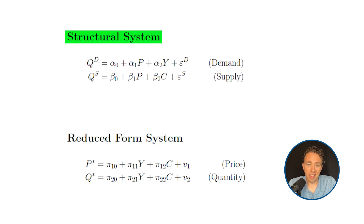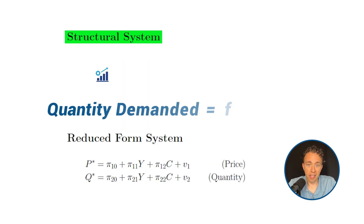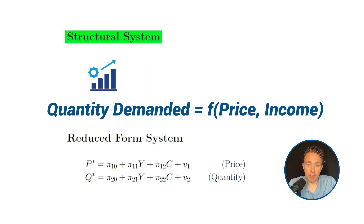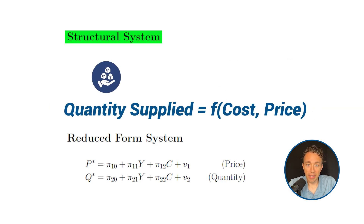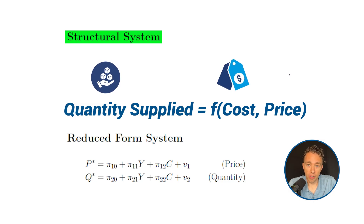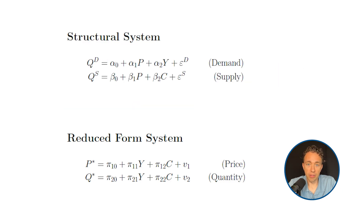Structural equations contained the quantities that we cared most about from an economic theory perspective. As an example, the quantity demanded of a good is a function of the price of the good, the income of the consumers, and other factors. Likewise, the quantity supplied of a good depends on the cost that producers face in making it, the price of the good, and any other factors that might influence their supply decision.